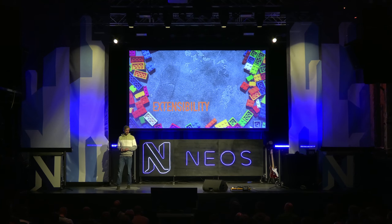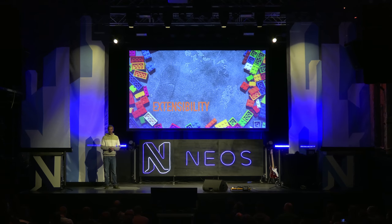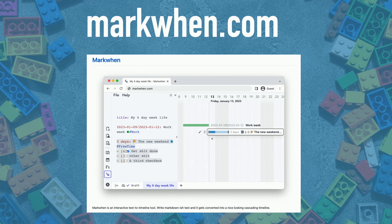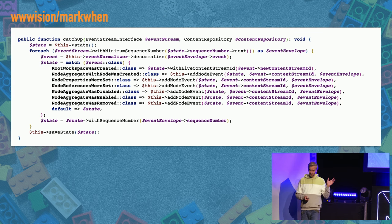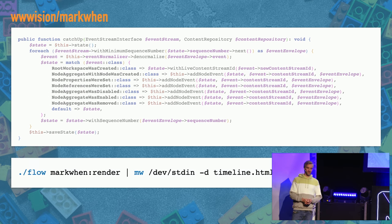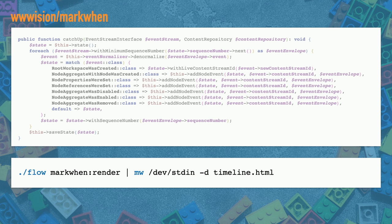To finish off, I want to show you three examples of custom packages that show how you can extend Neos in three different ways. Recently I stumbled upon mark-when — a markdown-like syntax that allows you to create interactive timelines. I thought this might be a good example for a simple projection. This is what I created — this is most of the projection code needed, and it stores state in a single JSON file. There's a mark-when CLI command that allows you to render it into a timeline.